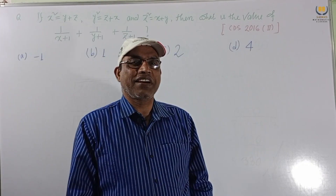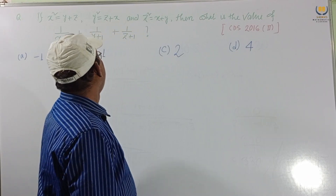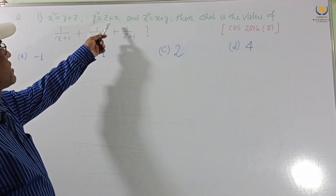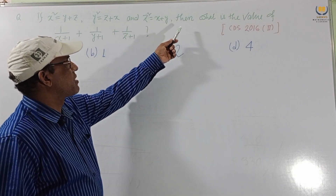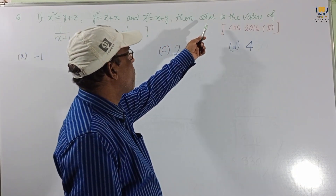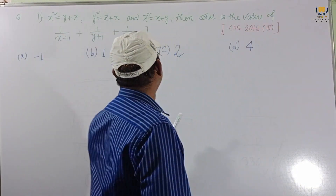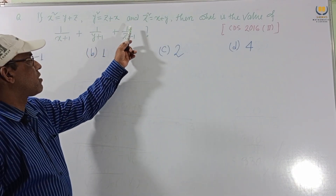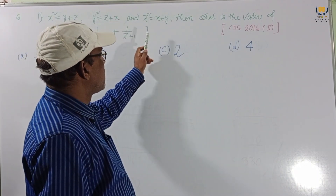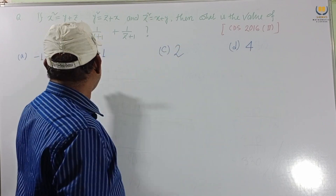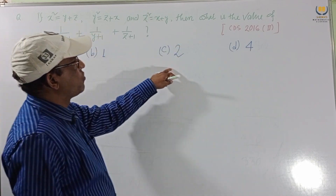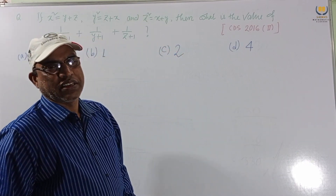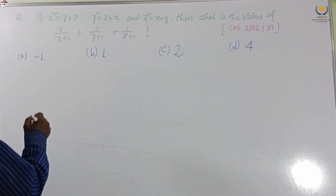Now consider another problem. Given: if x² = y + z, y² = z + x, and z² = x + y, then what is the value of 1/(x+1) + 1/(y+1) + 1/(z+1)? The options are −1, 1, 2, and 4. This was set in CDS 2016-2.